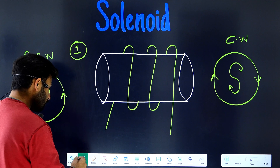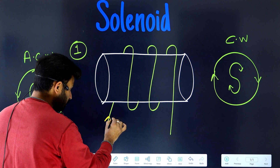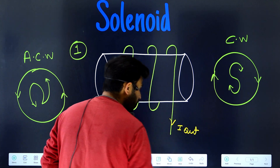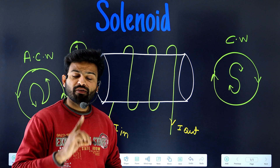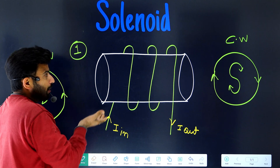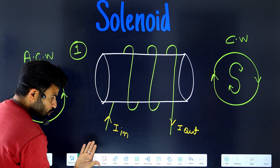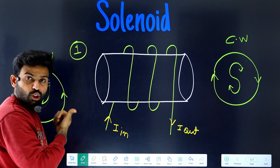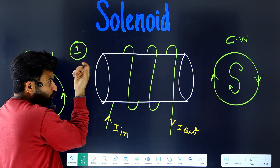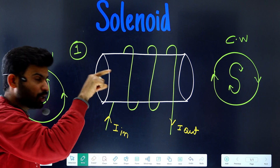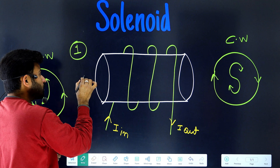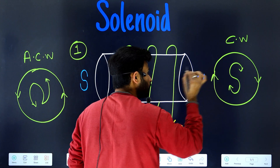Now let us apply this. Suppose the current is going in from this side — current in — and coming out from this side — current out. We are finding the direction of the magnetic field using the right-hand thumb rule. If your thumb is pointing in this direction, it means the magnetic field line is coming from the south and going towards the north. So this end is south and this end is north.